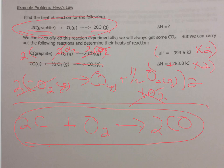So the last step that I have to do is I have to take negative 393.5 times 2 plus 283.0 times 2. When I add that all together, I can get my final delta H. When we calculate this, we should get negative 221.0 kilojoules.